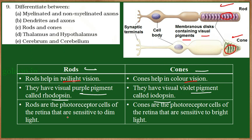Rod cells are photoreceptor cells in the retina that are sensitive to dim light, while cone cells are photoreceptor cells sensitive to bright light. During daytime when light is bright, the cone cells get activated enabling day vision. During evening or night when light is dim, the rod cells get activated, enabling twilight vision. These are the differences between rods and cones.